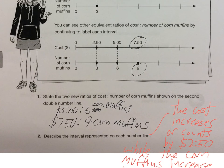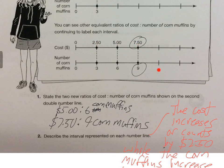The cost increases by $2.50 while the corn muffins increase by three each time. So you just keep going: plus $2.50, plus three, plus $2.50, plus three, and continue it out as far as you want. So $2.50 times three, $2.50 times four, and so on. This is just how to work with double number lines or tape diagrams when analyzing ratios and answering questions.